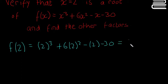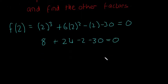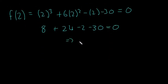And it should be equal to 0. So I'm going to test that now, so that is going to be 8, that's going to give us 4, 6 by 4 is going to be 24, minus 2, and minus 30. 8 plus 24 is going to be 32, and minus 2 and minus 30 is going to be minus 32. So they'll all cancel, and they will give us 0, it's true.